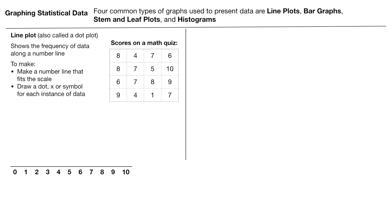And then all we're going to do is simply make a dot, an x, or a symbol for each instance of data. So if we looked up here, we can see we have an 8. I'm going to cross off the 8, and I'm going to put a little x right there to indicate that value.